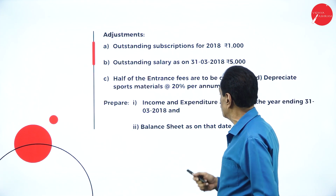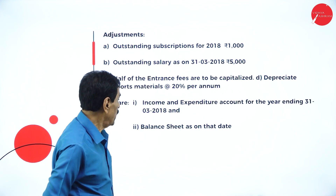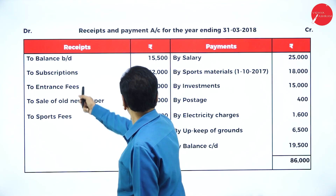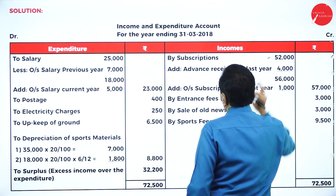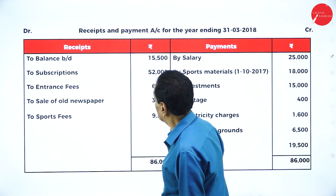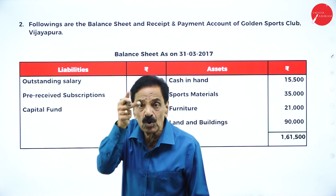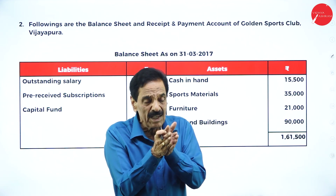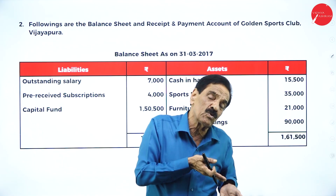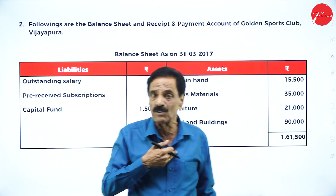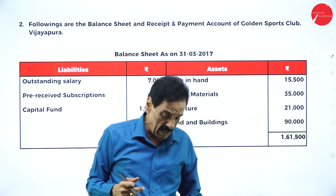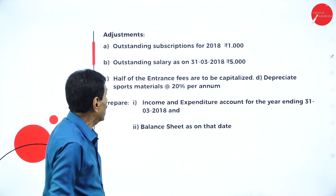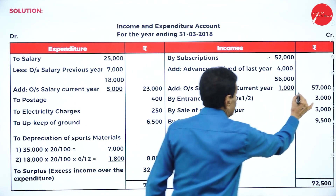Depreciation on sports material is 20% per annum. Now we solve the problem. On the income side, subscription is 52,000. Advance received in the last year — that is, received in 2017 for 2018 — becomes income in the current year and should be added. Add outstanding subscription of the current year. It now becomes 57,000.